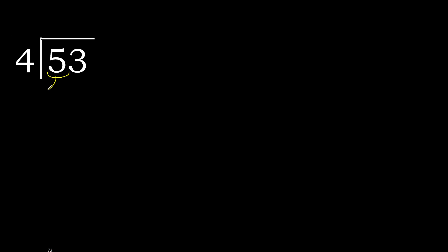53 divided by 4. 5 is not less, therefore with 5, 4 — multiply by which number is nearest to 5 but not greater. 4 multiplied by 2 is 8, 8 is greater. Multiply by 1 is 4, 4 is not greater. 5 minus 4 is 1.